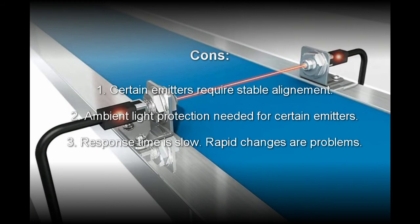All right, now the cons for photoresistor beam circuits. Usually has to do with the type of emitter you select. For example, certain emitters require stable alignment like lasers. This can drive up cost or complexity depending on your situation. Ambient light protection is also needed for certain emitters. And the photoresistor itself, the main drawback is the response time is really slow. So if you have an application that requires rapid response to data and input, you might want to select something else.